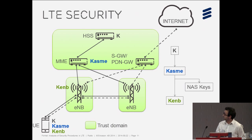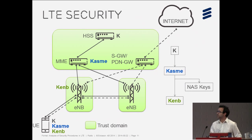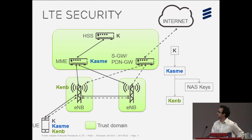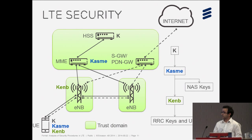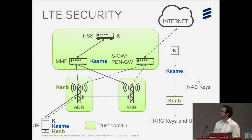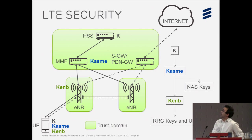The KASME key is in turn used to derive another key called Key eNodeB, shared between the serving E-NodeB and the user equipment. This key is used to derive other keys to activate security for the RRC protocol, and also to derive encryption keys for the user plane.